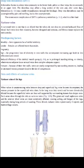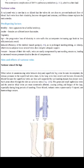A varicose vein is a dilated vein. When the vein gets dilated, the valves are not working properly, so it does not prevent the backflow of blood, which is mandatory. When such veins lose their elasticity, they become elongated and tortuous, and their fibrous tissue is replaced by tunica media, so the basic anatomy and physiology of the veins are deranged.